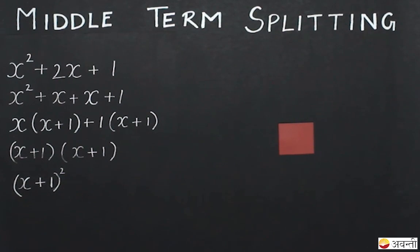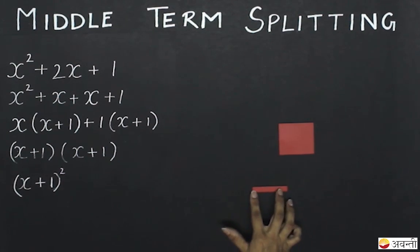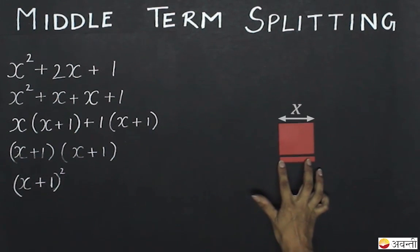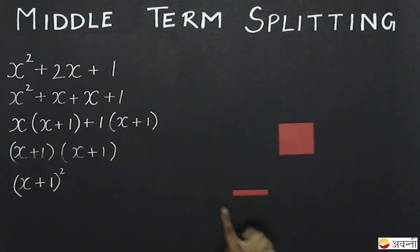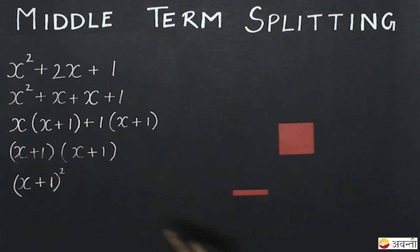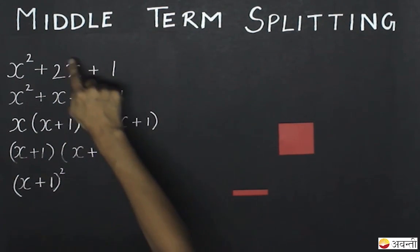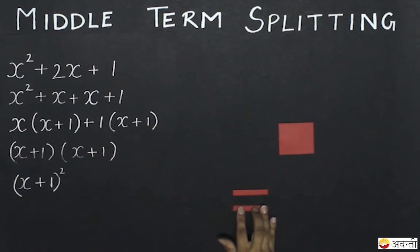Similarly, if I take a strip with a breadth of 1 and a length of x, you can see that this length is equal to the side of the square. The area of this strip will be x into 1, that is x. Now, if I have to represent 2x, I will take two such strips.